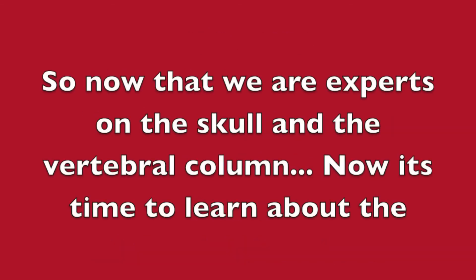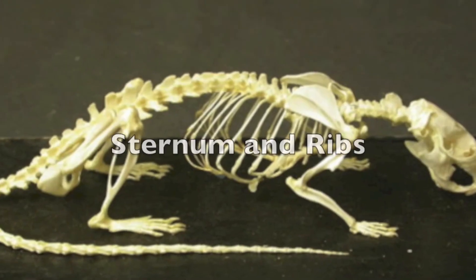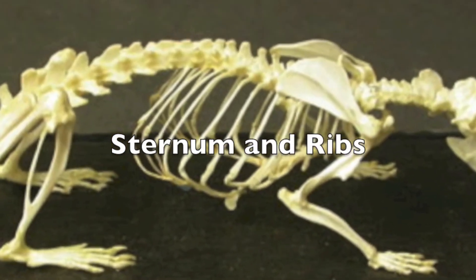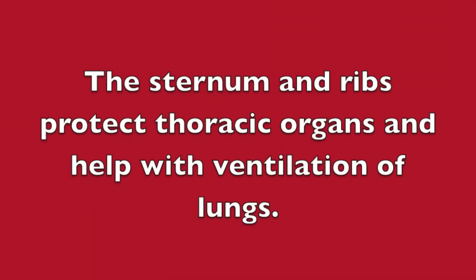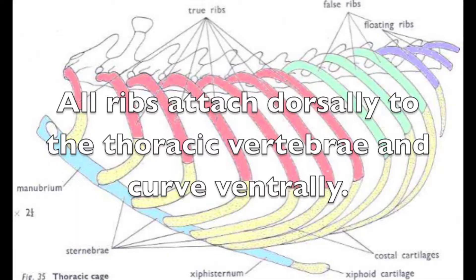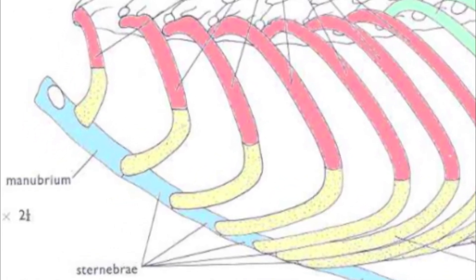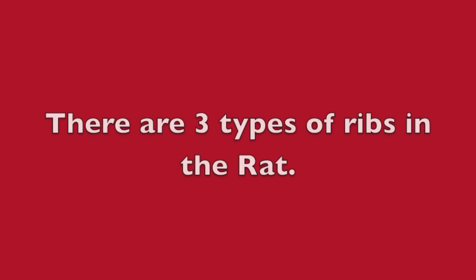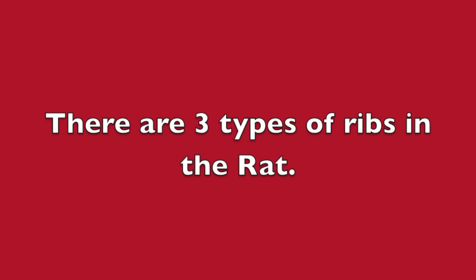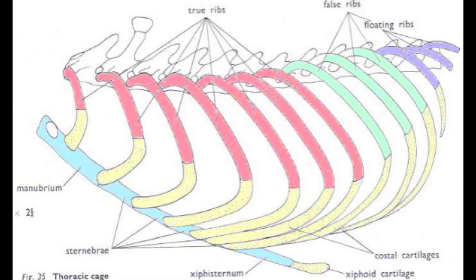Now that we are experts on the skull and vertebral column, it's time to learn about the sternum and ribs of a rat. The sternum and ribs protect thoracic organs and help with ventilation of the lungs. All ribs attach dorsally to the thoracic vertebrae and curve ventrally. Another word for the sternum is the manubrium. There are three types of ribs in the rat. The true ribs are highlighted red — a rat has seven pairs, and true ribs are directly attached to the sternum. False ribs are highlighted green, and they are attached to the rib anterior to themselves.